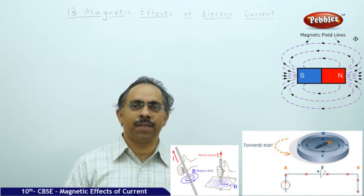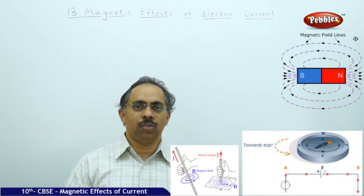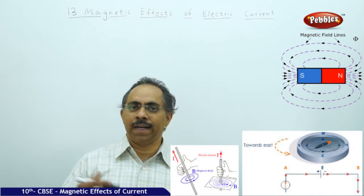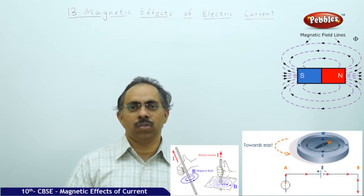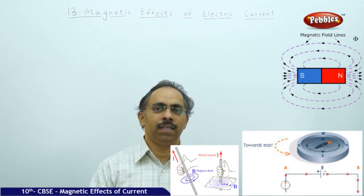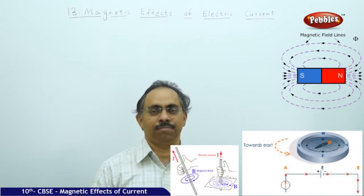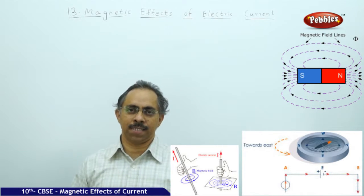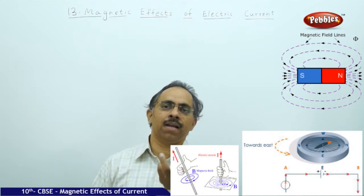Similarly, whenever we say there is a magnetic field associated with the current, it is not possible for us to see that particular magnetic field. So we need to take the help of a device like a magnetic compass or a magnetic needle, so that when you place it near a magnetic field it will show some deflection.